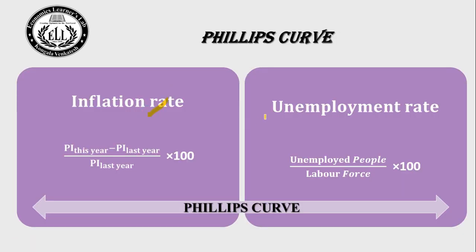You know the formulas for calculating the inflation rate and unemployment rate, but for the time being just recall them. The formula for inflation rate is: π = (Price Index this year − Price Index last year) ÷ Price Index last year × 100. The unemployment rate formula is: Unemployed People ÷ Labor Force × 100. So the Phillips curve shows a negative relationship between the inflation rate and unemployment rate.